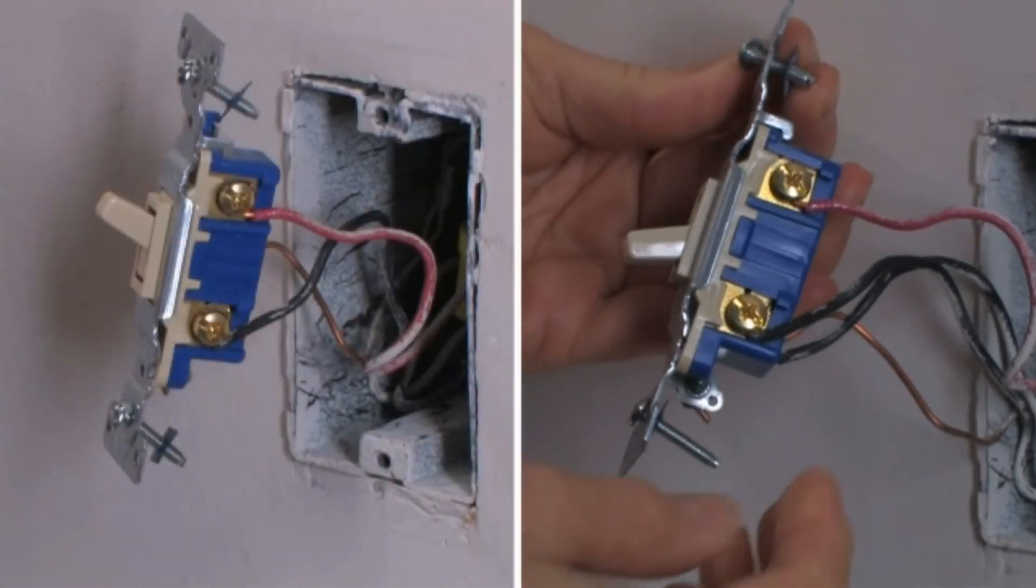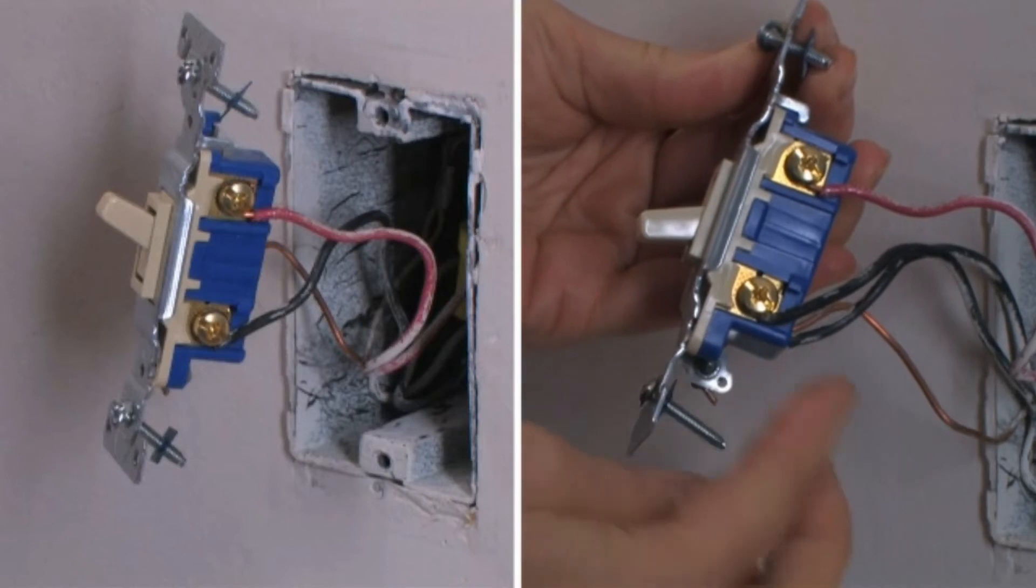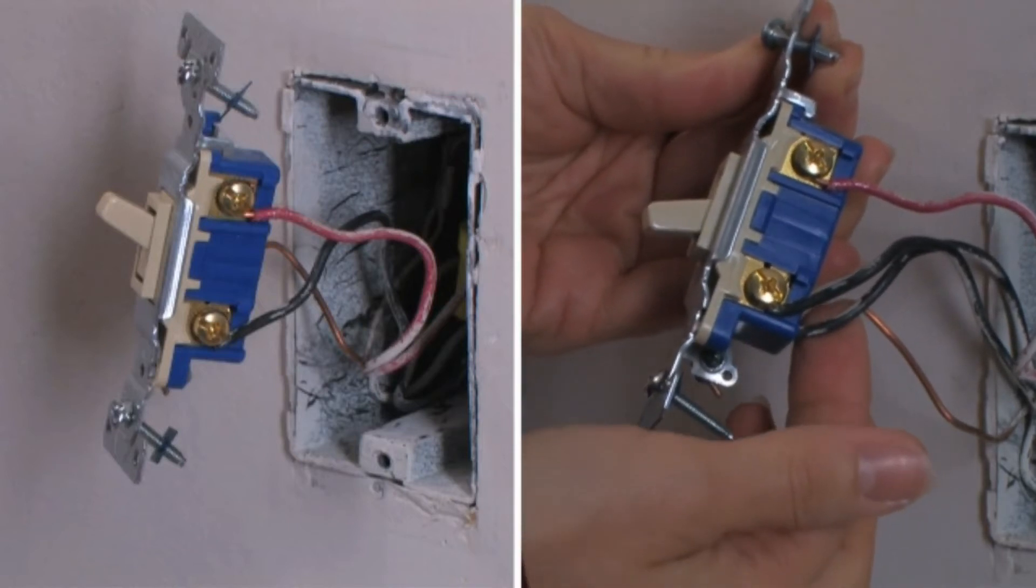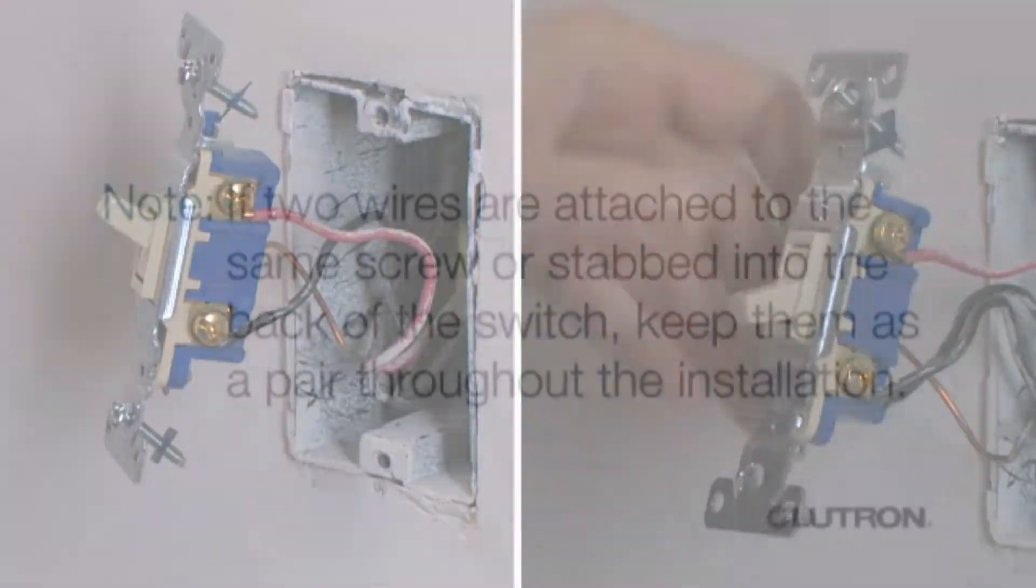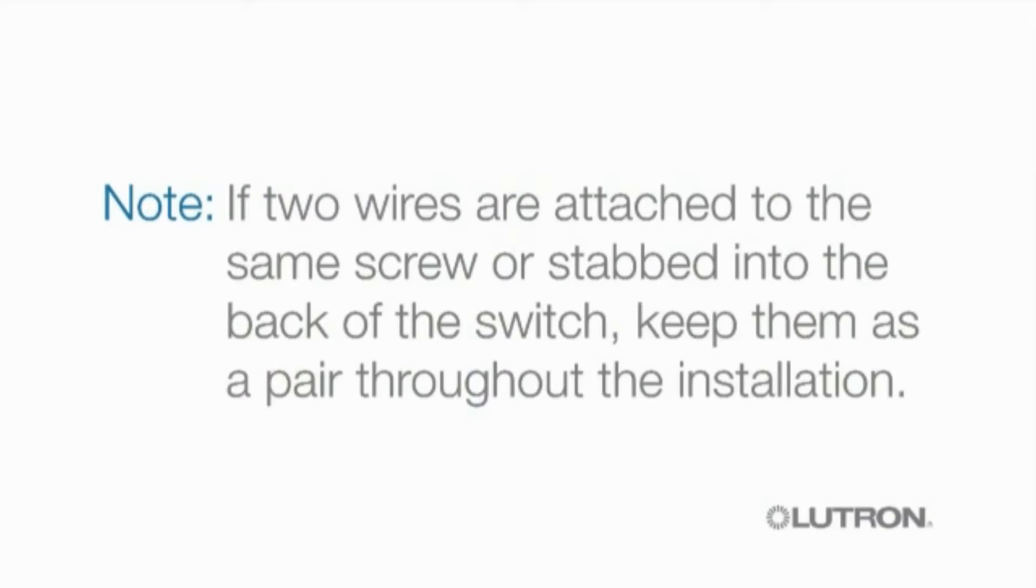You'll find two or possibly three additional wires attached to either screws on the switch or stabbed into the back of the switch. Note, if two wires are attached to the same screw or stabbed into the back of the switch, keep them as a pair throughout the installation.